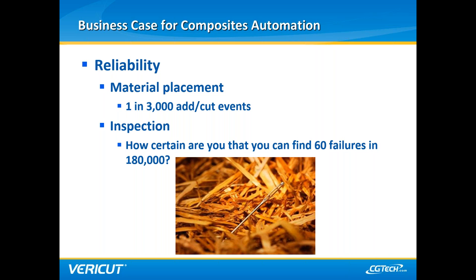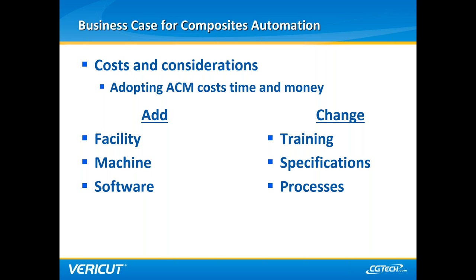Considering the previous example of inspecting the 787 fuselage section, a manual inspection process seems daunting when detecting approximately 60 process failures in 180,000 events. Because of the magnitude of this undertaking, supplementing or replacing manual inspection seems mandatory. The cost associated with adopting ACM is comprised of what must be added and what must be changed. Typically, a new facility is erected to house the ACM machine, due to the thick foundation required to ensure accuracy even while tons of machinery are rapidly moving.